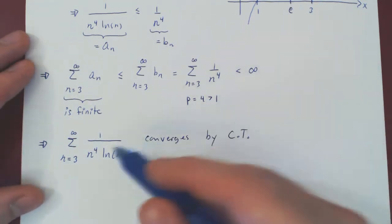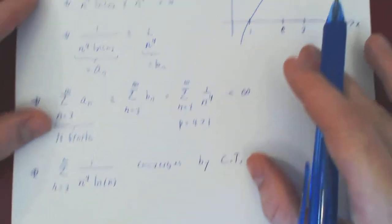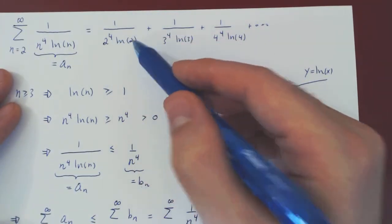Is that a problem? Well, no. We're only missing the first term, which is 1 over 2 to the 4 ln of 2.